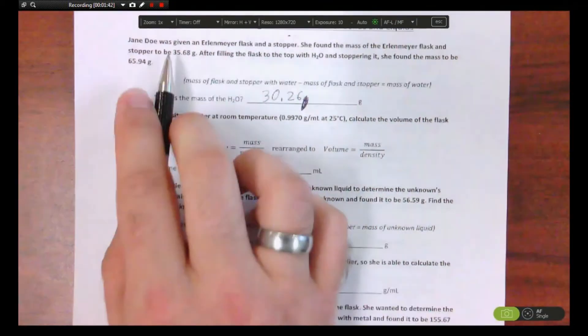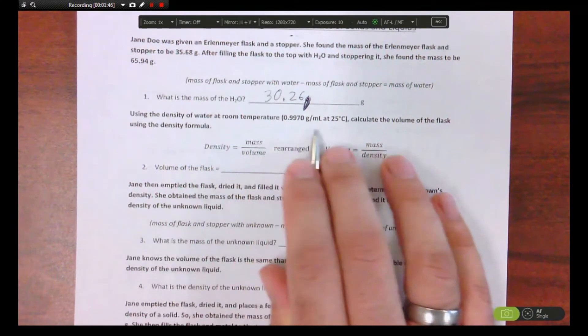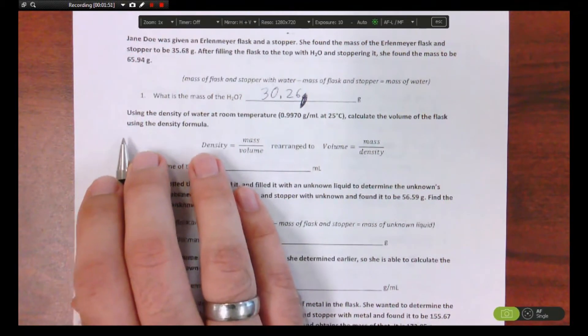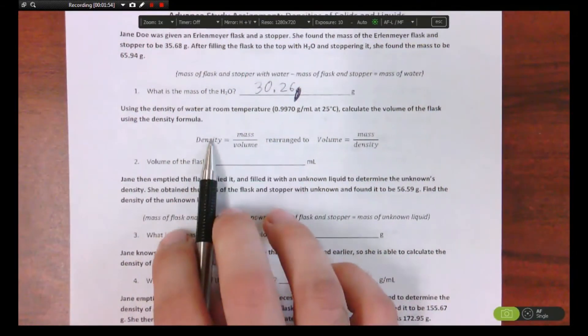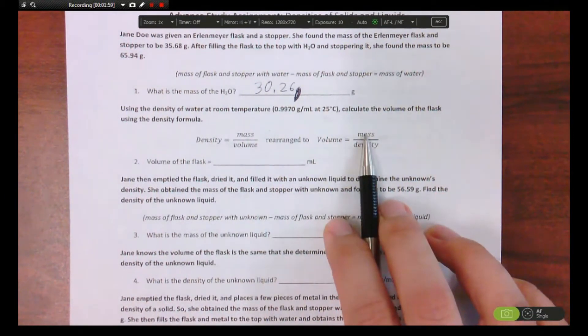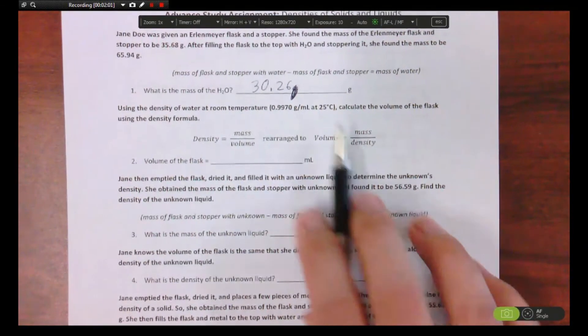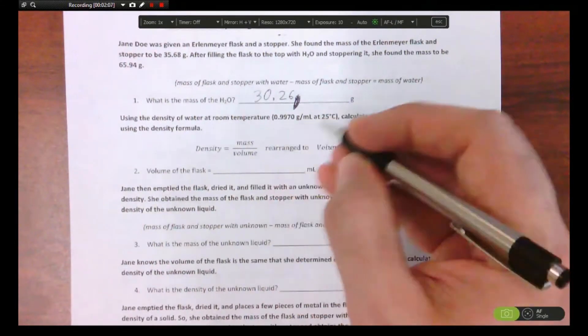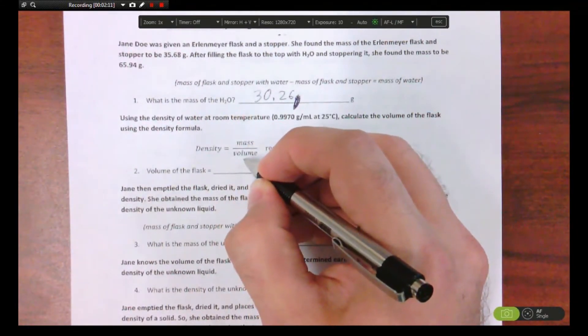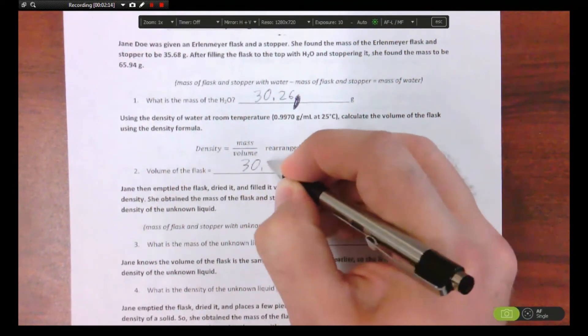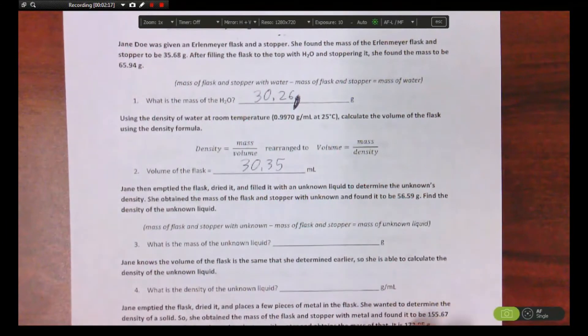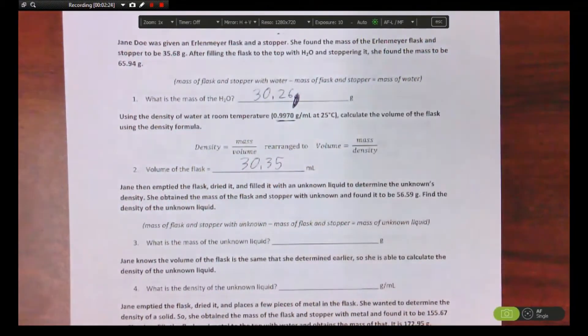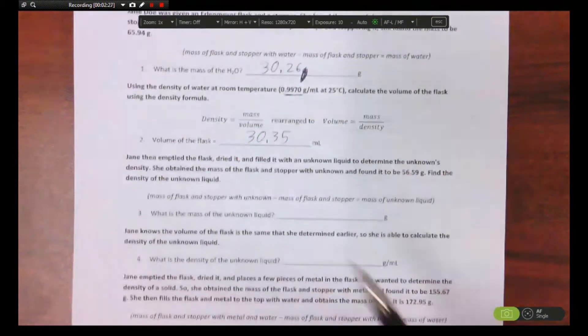So you subtract these two, good job. Now using the density of water, and they even give it to you right here just like in the notes yesterday, calculate the volume of the flask using the density formula. They give it to you right here and they rearranged it to solve for volume. You need the mass of the water which you just found and the density of water which is right here. So you take this divided by that, excuse me, and you should get your answer which was very close to the other one. What y'all get? 30.35, and that's in milliliters. Thanks, divided by the density right there.